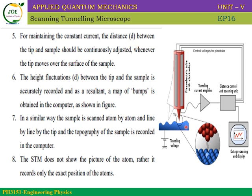The needle-to-sample gap is kept constant. For maintaining constant current, the distance between the tip and sample is continuously adjusted. If the current fluctuates due to height variations on the sample surface, the controller adjusts accordingly. We can see the fluctuations in a graph — if there is a fluctuation at any particular point, it indicates the presence or absence of an atom. We can analyze it easily.